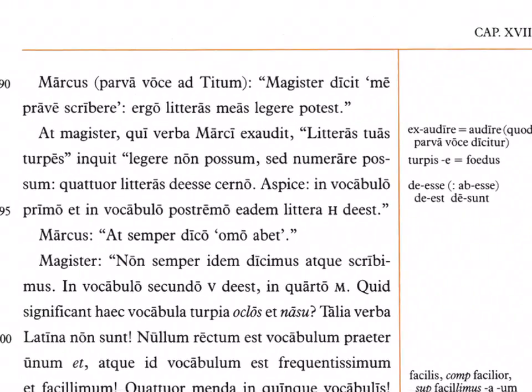Marcus says in a small voice, 'parva voce,' to Titus: the teacher says that he reads incorrectly, 'ergo literas meas legere potest' — therefore he is able to read my letters. This is Marcus being a smart aleck, since the teacher had said he couldn't properly read them. But the teacher overhears and says 'literas tuas turpes legere non possum' — your ugly letters I am unable to read, but I can count them.